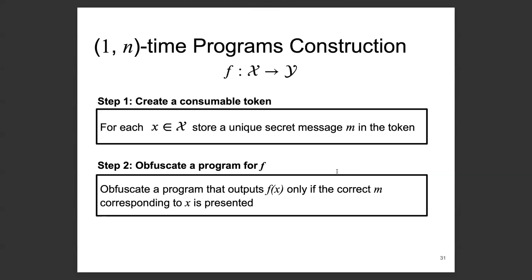The core idea of our construction is to obfuscate a program containing the intended functionality F such that evaluating F over an input X requires a corresponding secret message M. So the program first will check, do you have the secret message M corresponding to X? If that's true, it will output F of X, otherwise it will output nothing. And what we do is that we store the messages corresponding to the domain of F in a consumable token. And remember, the adversary can only retrieve up to N secret messages from the consumable token, and so it can run this program only over only up to N different inputs.